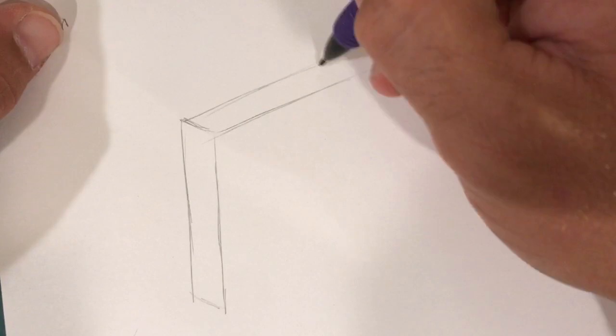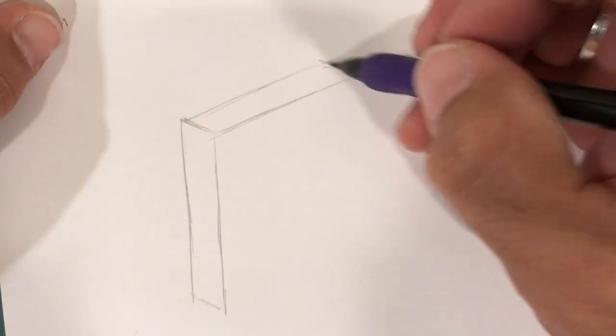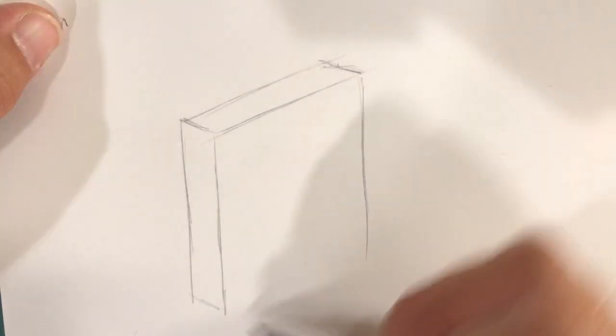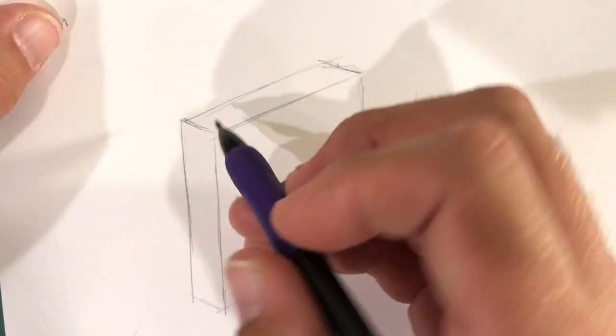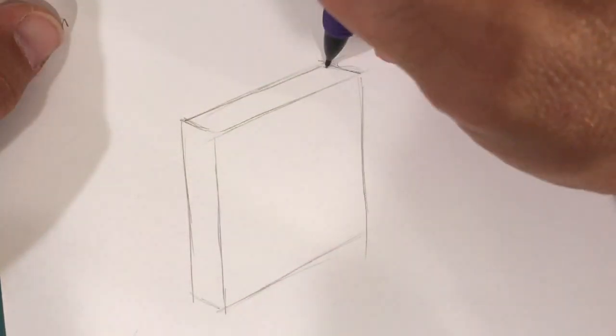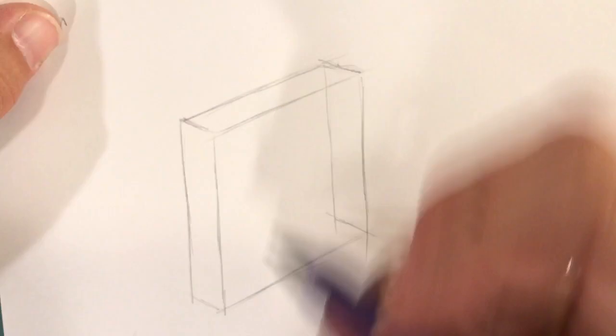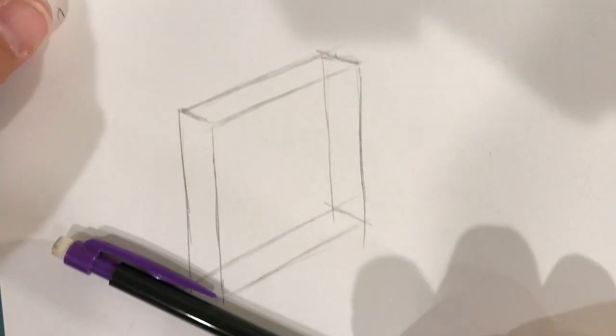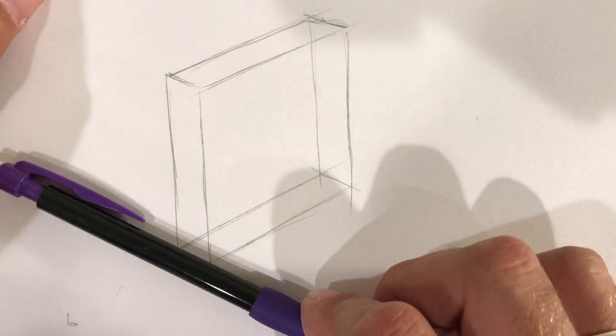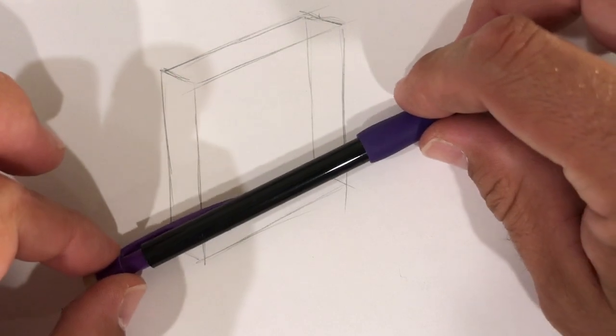We're going to figure out how big this cube is. Once again, we're checking to make sure that this is parallel with this and this and this. These are all parallel.